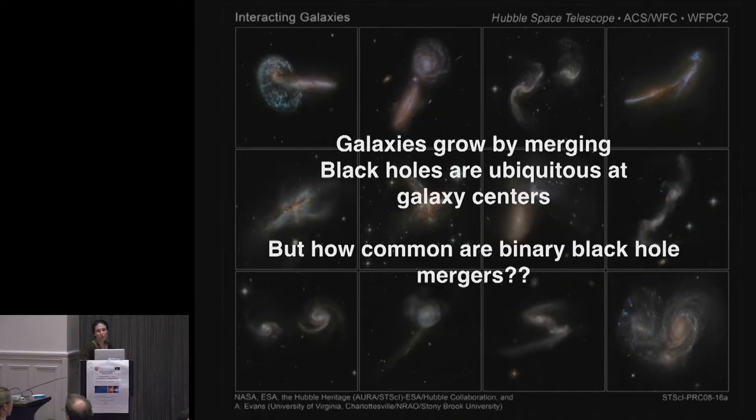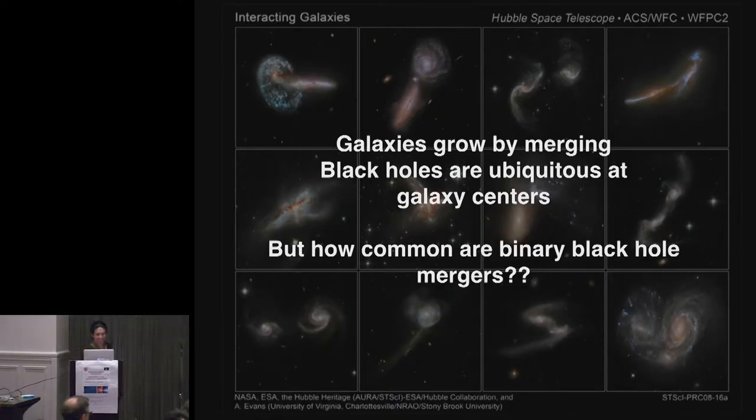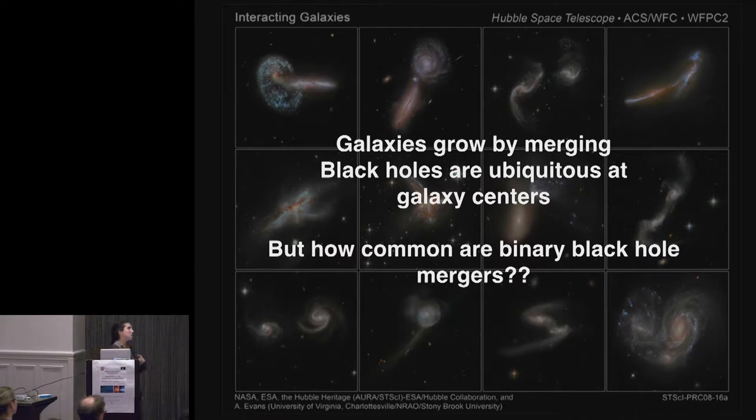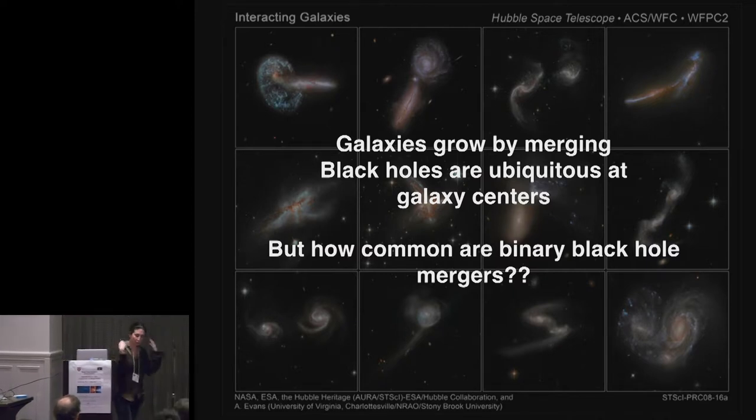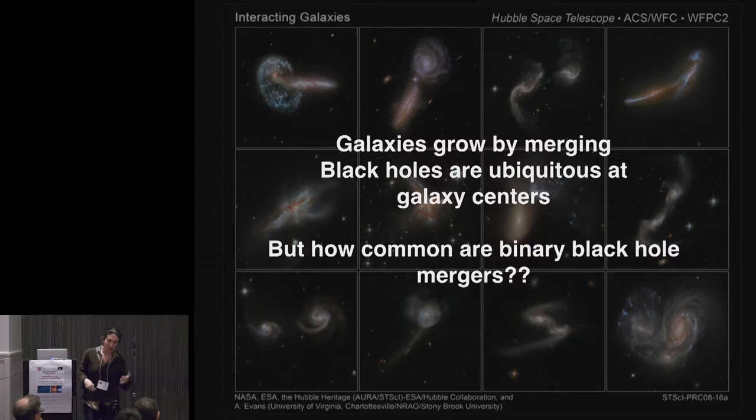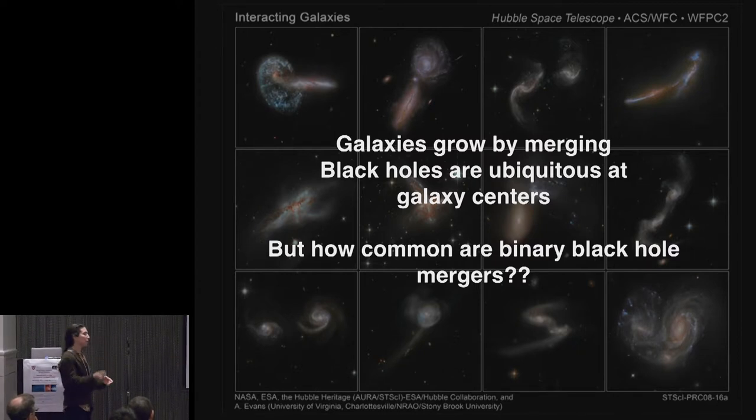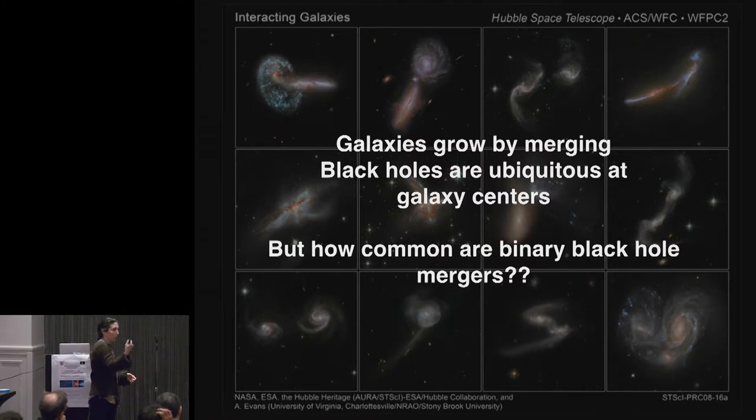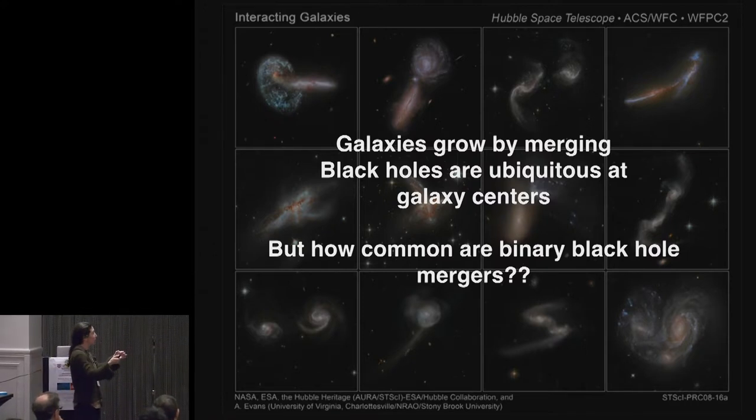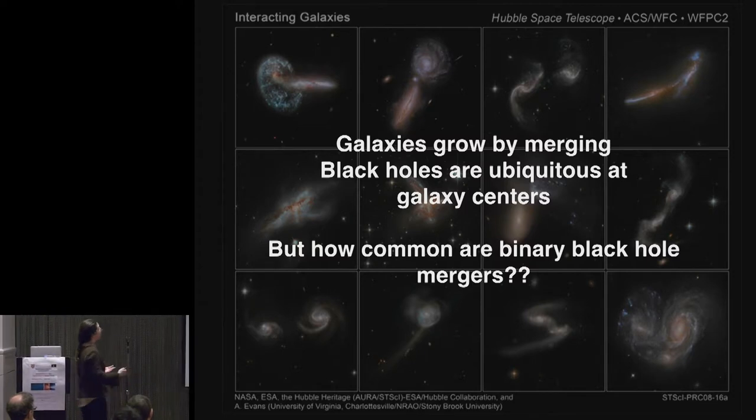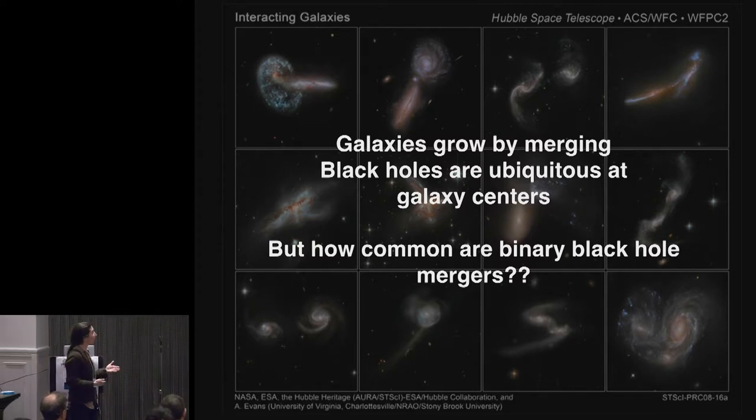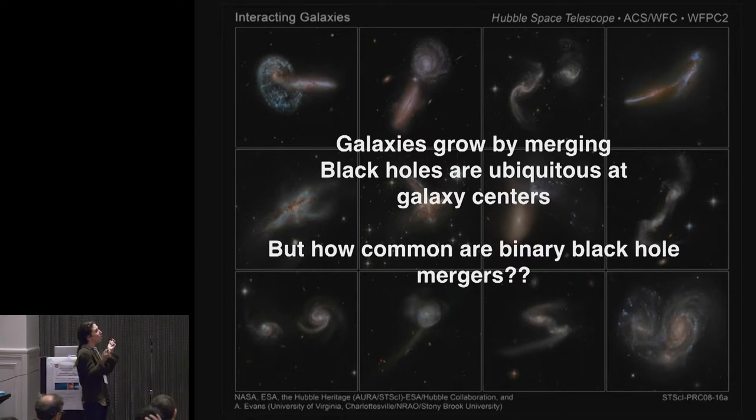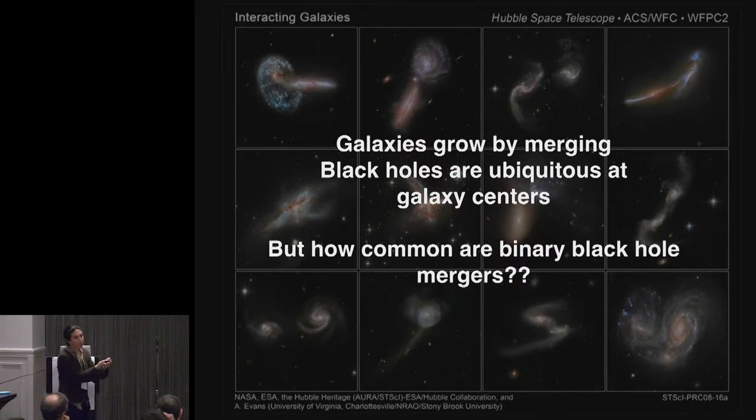I'll go a little bit slower. So I am interested in observationally with electromagnetism helping to constrain the population of subparsec binaries that eventually we hope will get close enough to form gravitational radiation and then merge.